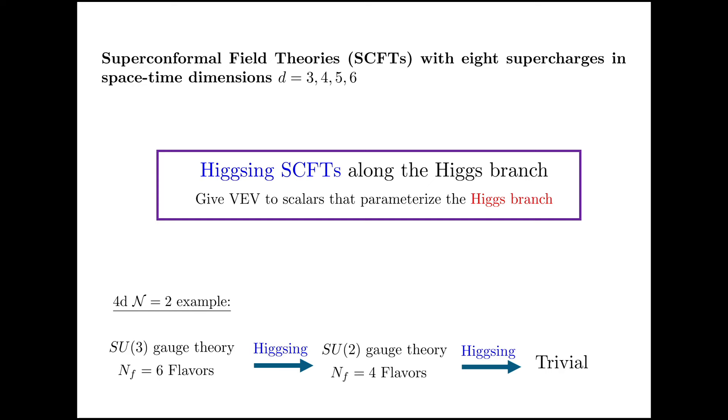For example, SU(3) with six flavors: I do a Higgsing, give some VEV to some scalars, gauge symmetry gets broken, end up with SU(2) with four flavors. I do another Higgsing, gauge symmetry completely broken, end up with a trivial theory.